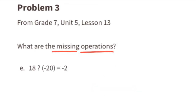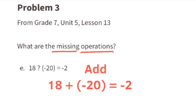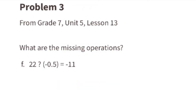Part e: what operation can we substitute for the question mark to make this equation true? An addition sign, because 18 plus negative 20 equals negative 2 — that's the same as 18 take away 20 equals negative 2.